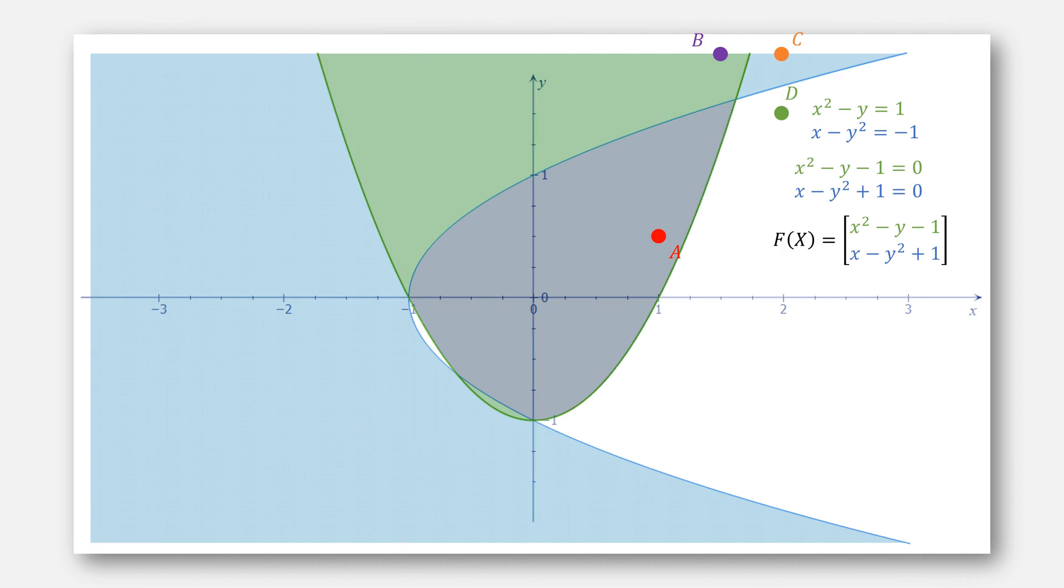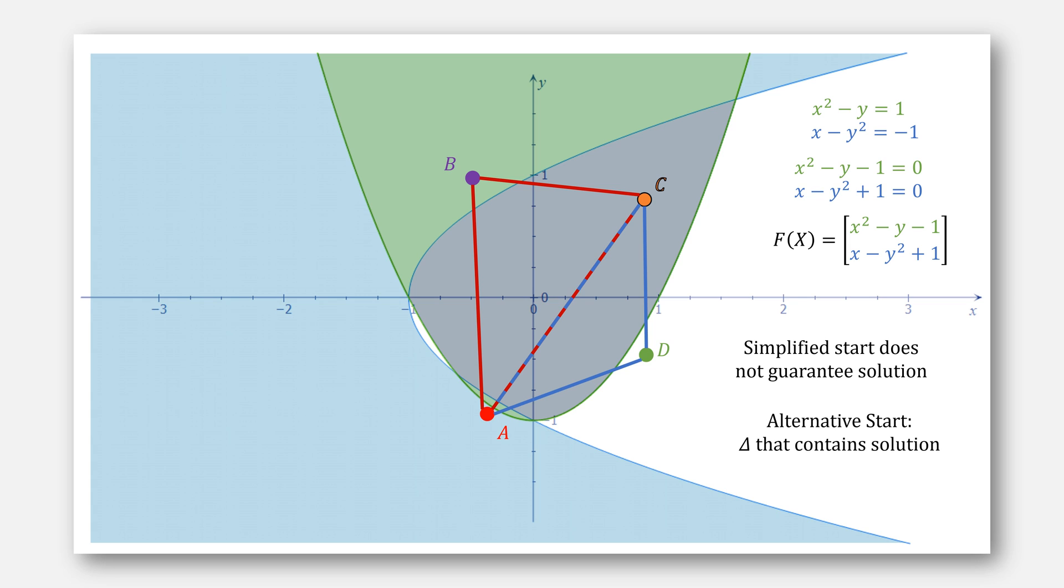Recall that we started with these four points. We didn't necessarily have to pick these four. We could have chosen these four, each of them having that different sign combination. The trouble, though, is that now we don't actually have a solution in either triangle. Our simplified start doesn't guarantee a solution.